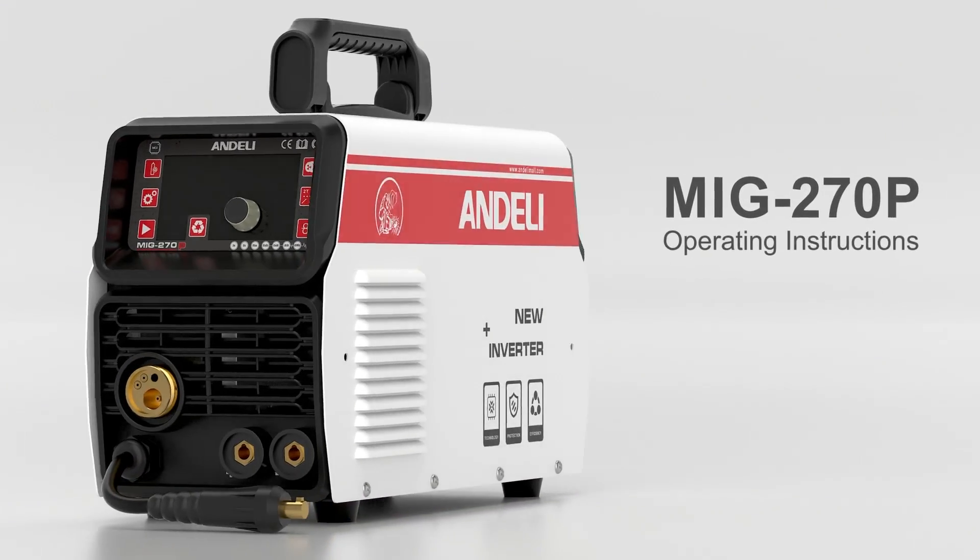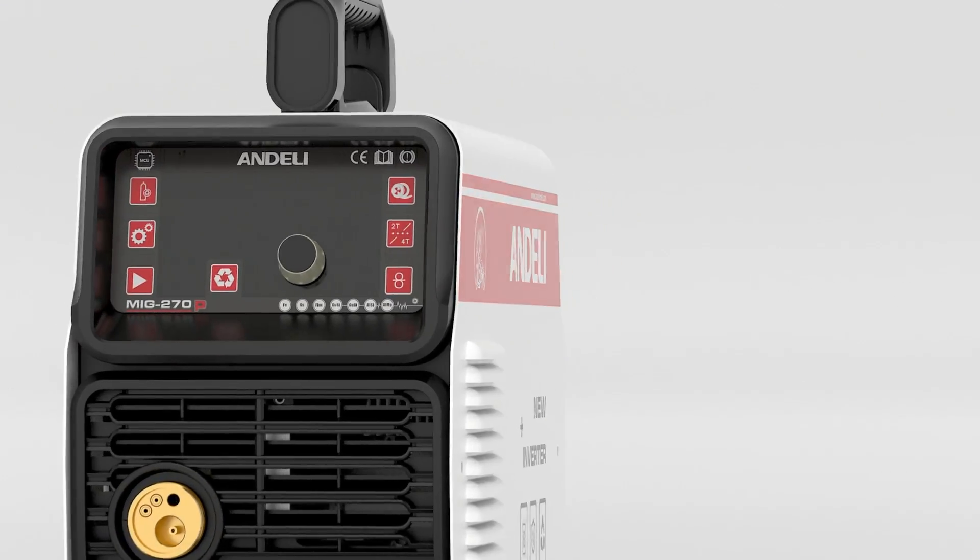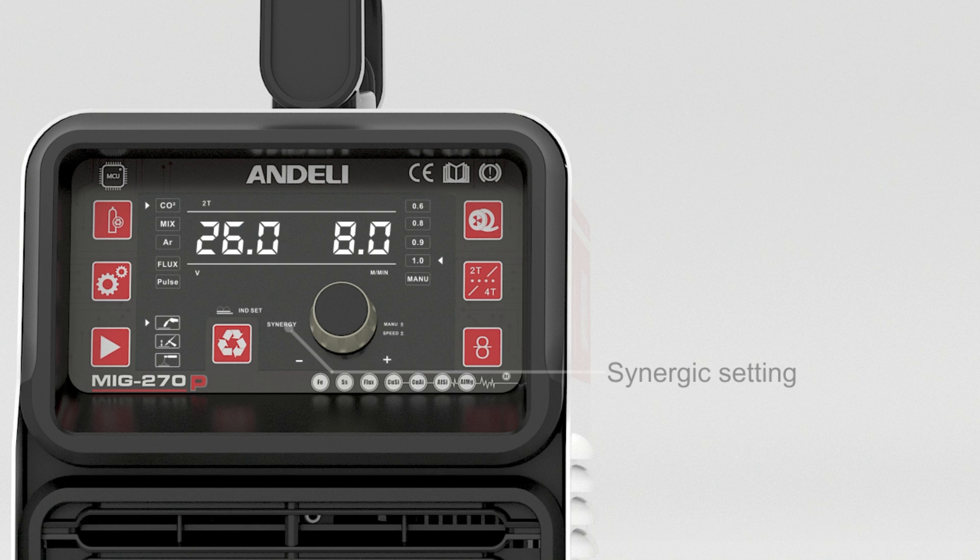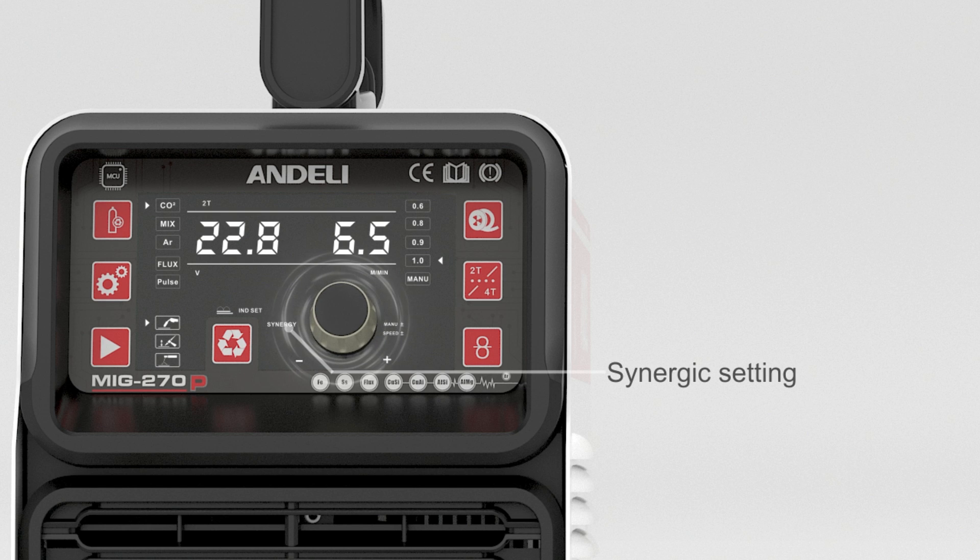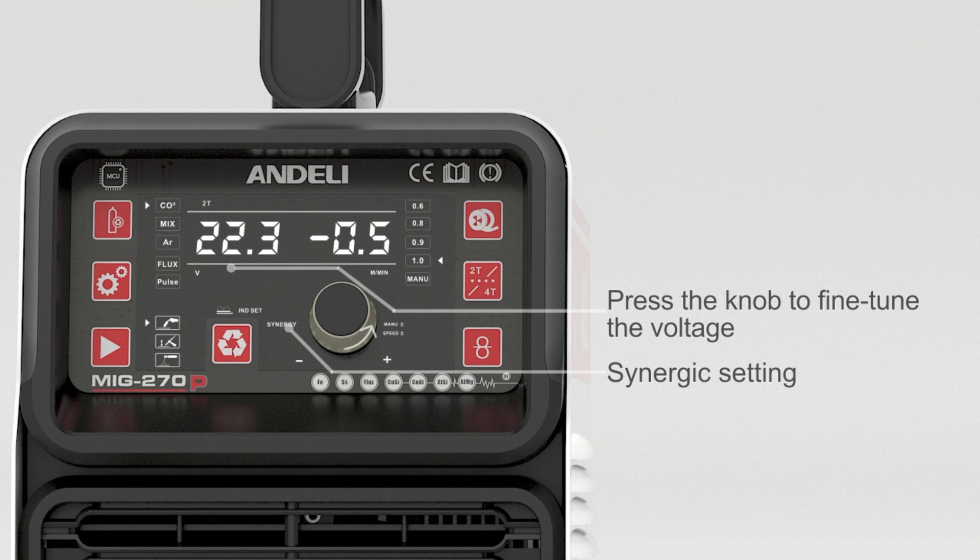MIG 270P Operating Instructions. Synergic setting automatically matches voltage and wire feeding speed. Press the knob to fine-tune the voltage.